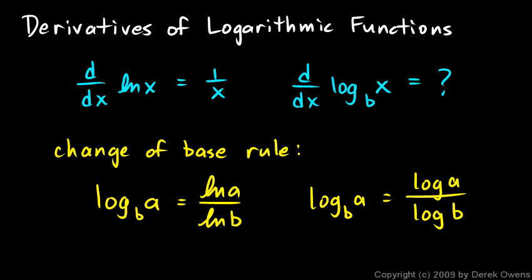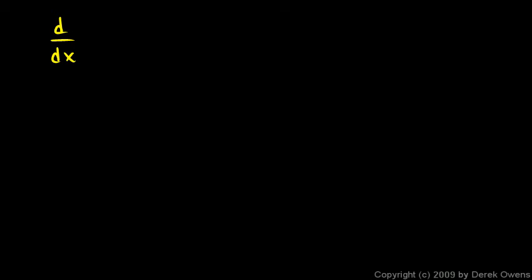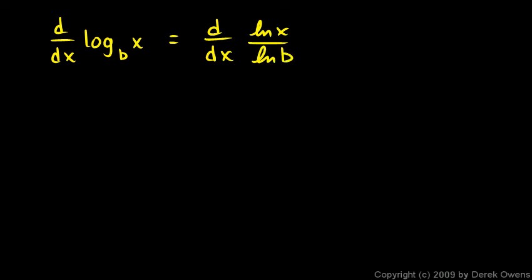We're going to use this change of base rule to differentiate a base-b logarithm. I want to find the derivative with respect to x of log base b of x. By the change of base rule, that equals the derivative with respect to x of the natural log of x over the natural log of b. Now b is just a number, so the natural log of b is a constant.